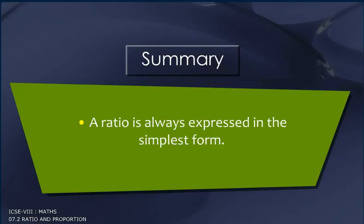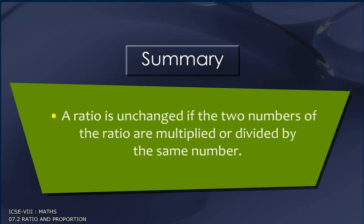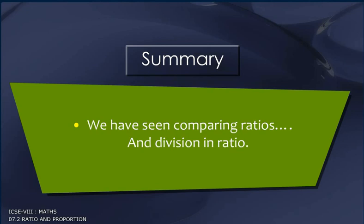Summary. A ratio is always expressed in the simplest form. A ratio is unchanged if the two numbers of the ratio are multiplied or divided by the same number. We have seen comparing ratios and division in ratio.